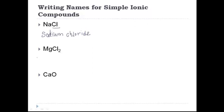Let's do another one: MgCl₂. In an ionic compound, the subscript — so how many of each element there is — doesn't appear in the name at all. So Mg is magnesium and it's a cation, so it's just the name of the element. And again, chlorine becomes chloride. So every compound name you ever write in this class, you're going to see the "-ide" ending.